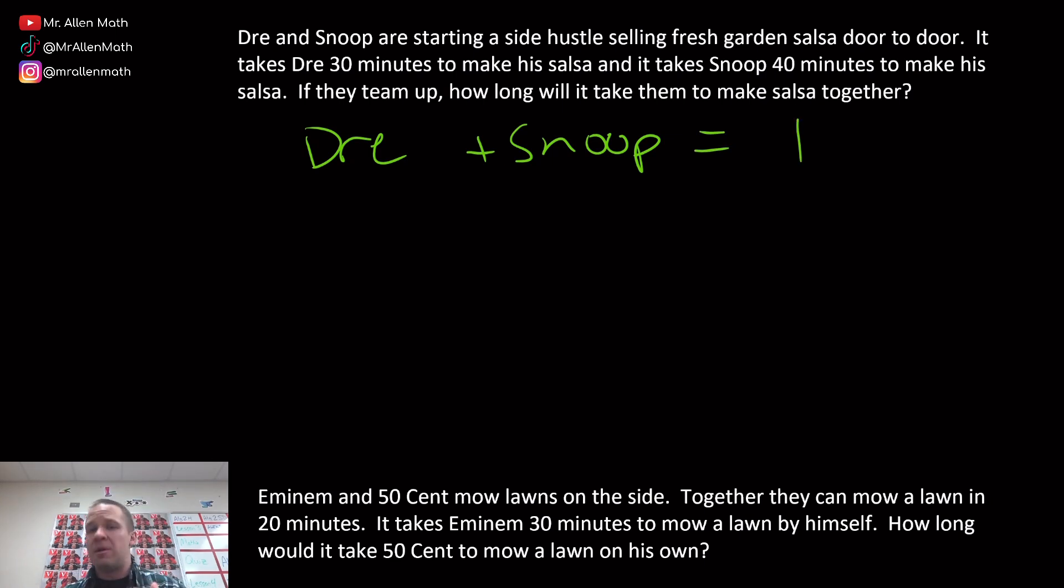Now for Dre, it takes 30 minutes per jar, so I'm going to go with X divided by 30, and then for Snoop, we've got 40 minutes, so X divided by 40 equals one. We want to see how long it's going to take for them to make one jar of salsa here.